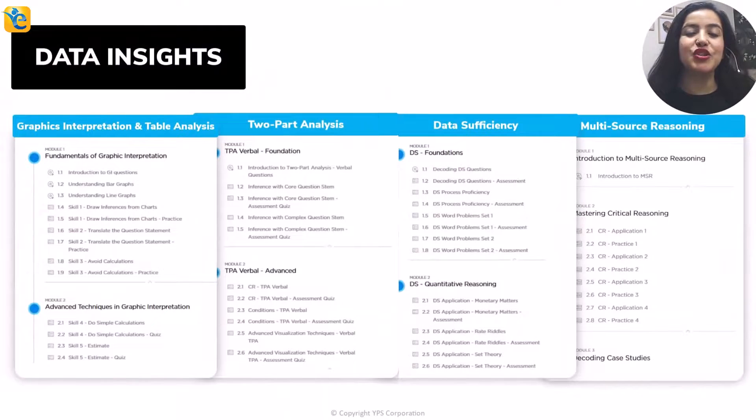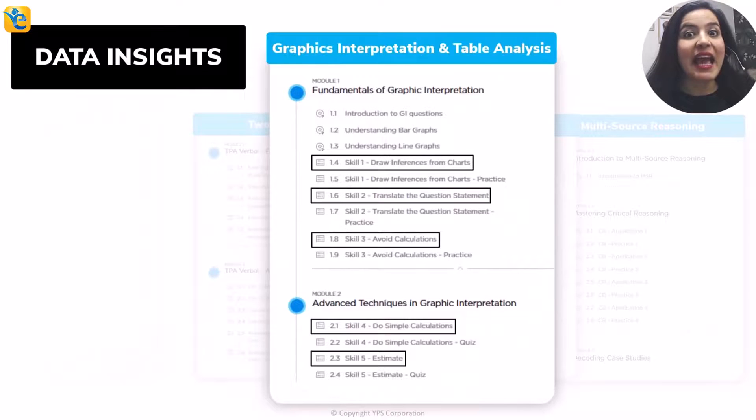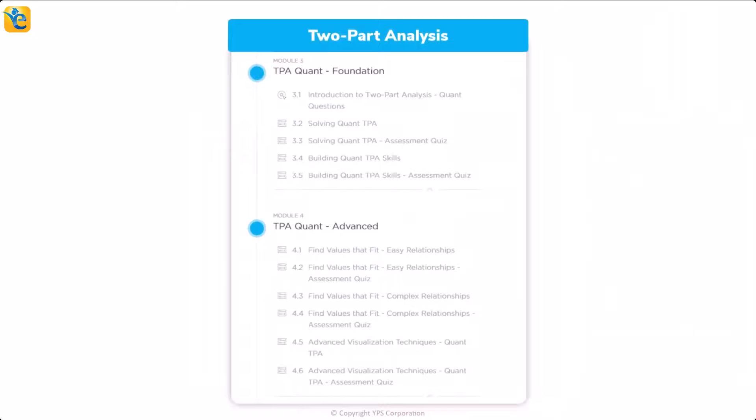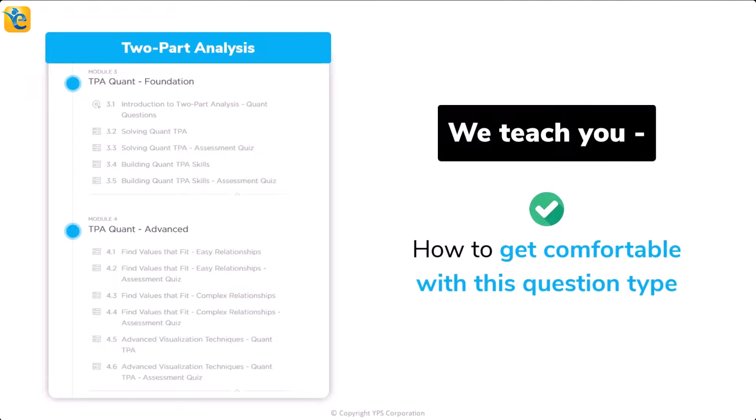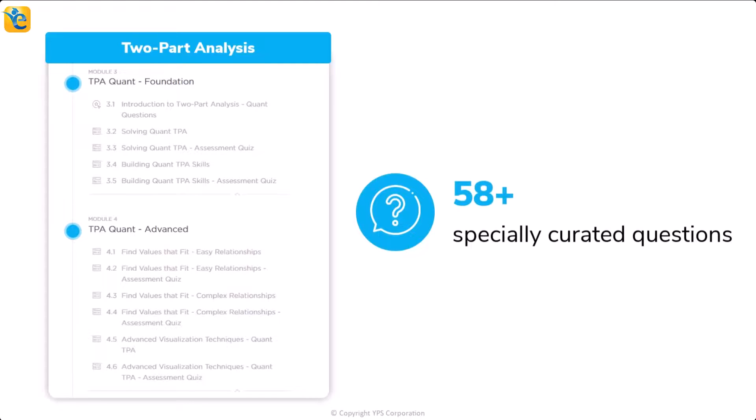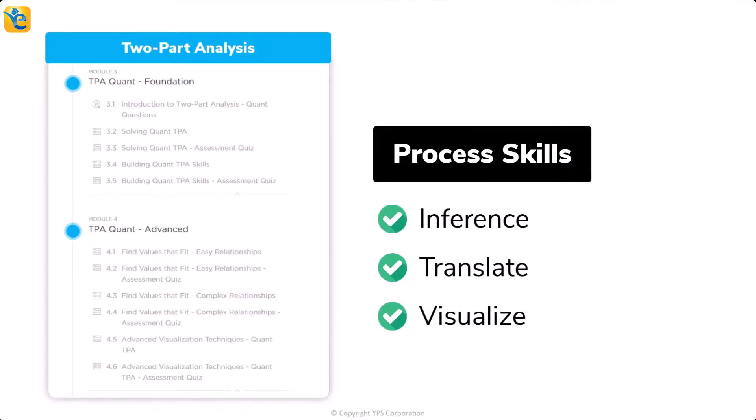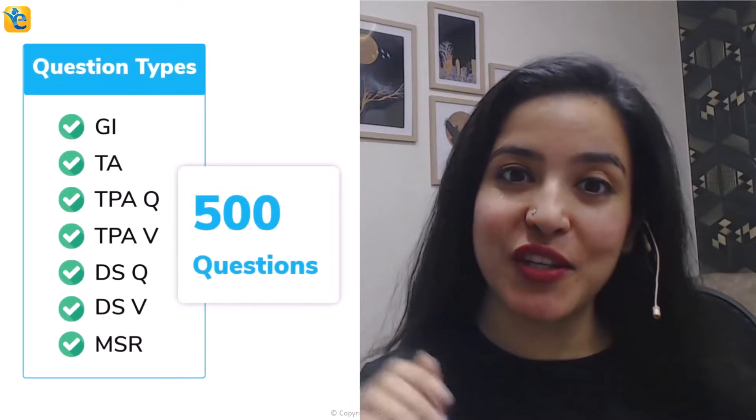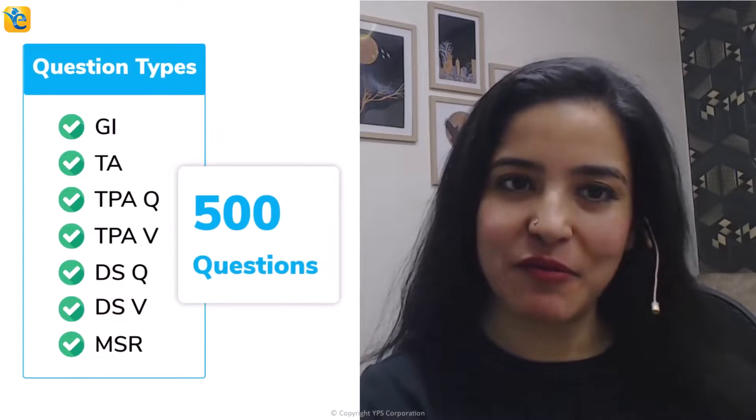At this point, let me ask you this. Could you have arrived at the approach of solving this question with this level of clarity had you not spent the effort in thoroughly understanding the information presented? Such is the power of the process of owning the dataset. Because this skill may not come naturally to many of you, we have created a course architecture that ensures that we teach you this skill through every guided quiz in the EGMAT DI course and we reinforce the same in every practice quiz. In fact, in the TPA Quant modules in the two-part analysis course, we teach you how to get comfortable with this question type. You will gain the confidence to handle any question of this type in the most efficient manner.